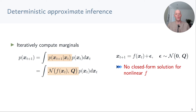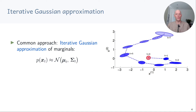Unfortunately if f is non-linear this integral cannot be solved analytically and we have to find some approximations. A common approach is to iteratively approximate the state distributions p of x_t using a Gaussian with mean mu_t and covariance matrix sigma_t. At every time step we push the Gaussian distribution of the current state through the transition function and approximate the distribution of the state at the next time step with a Gaussian, repeating this procedure until we reach the end of the trajectory.